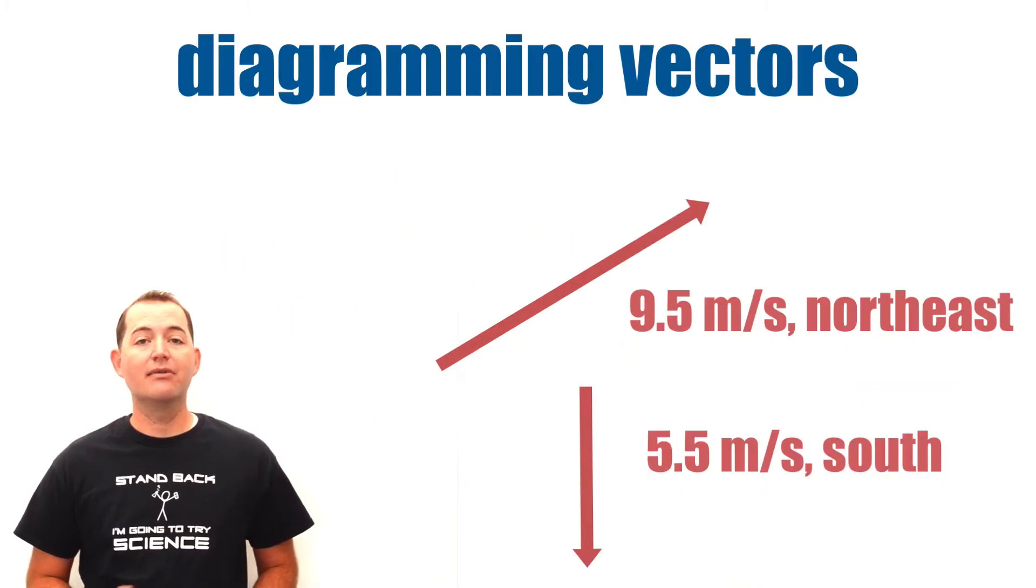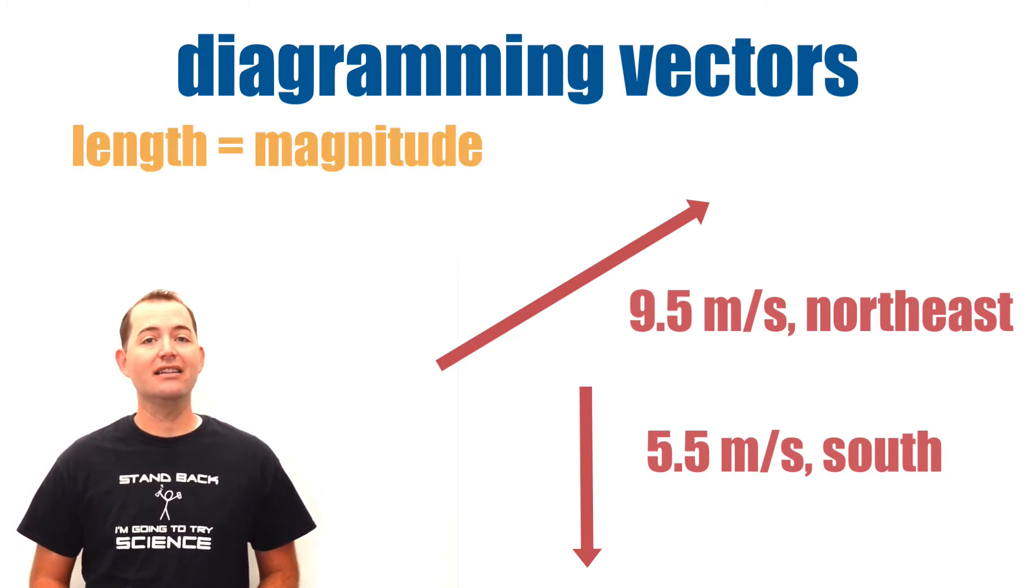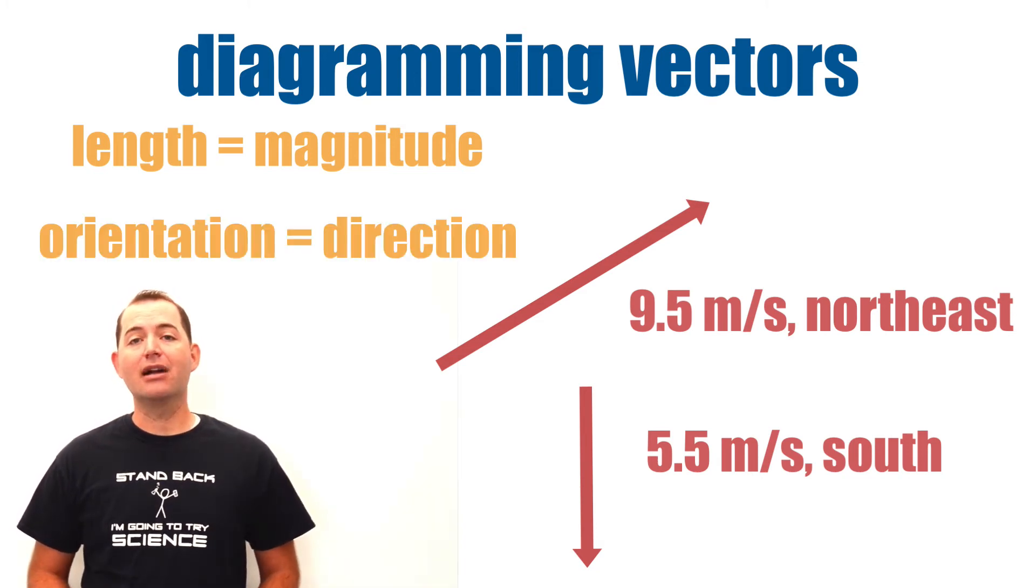We represent vectors in diagrams using arrows, where the length of the arrow represents the magnitude of the vector, and the arrow points in the representative direction of the vector.